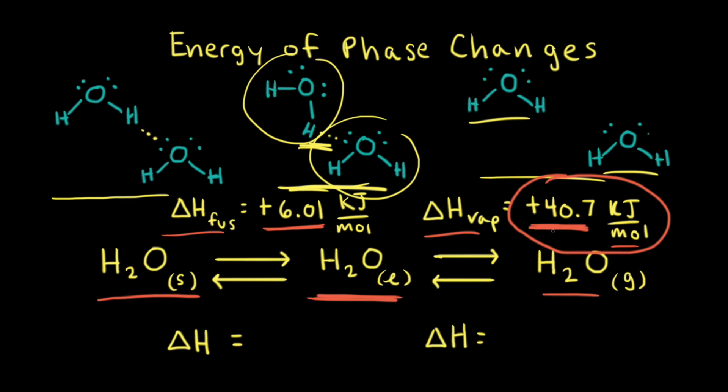If it takes positive 40.7 kilojoules per mole of energy to go from the liquid state to the gaseous state, if we go in reverse from the gaseous state back to the liquid state, that same amount of energy is given off. So we can write 40.7 kilojoules per mole. However, since the energy is given off, we need to include a negative sign.